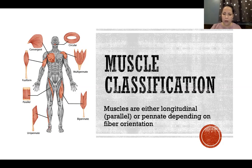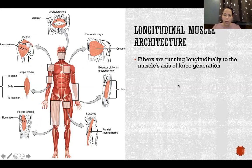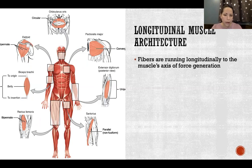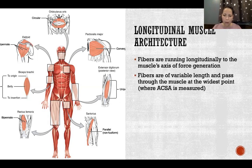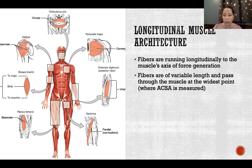In longitudinal muscle architecture, fibers run longitudinally — meaning in the same exact direction as the muscle's axis of force generation. Think of biceps brachii or triceps brachii, where the fibers run the length of the muscle in the same direction that force is applied to the bones. In these muscles, fibers pass through the muscle at its widest point, so ACSA will be approximately equal to PCSA.